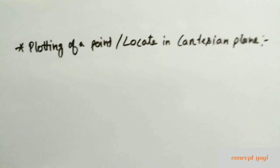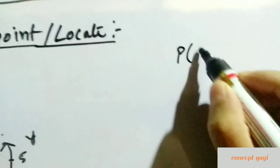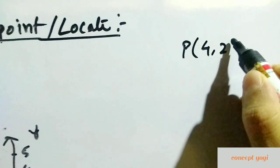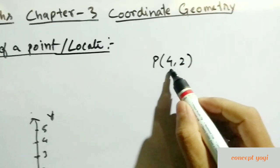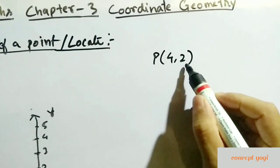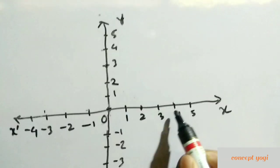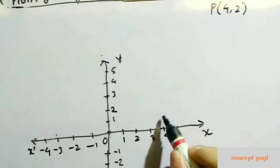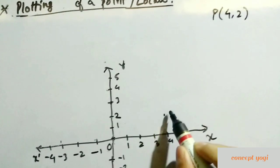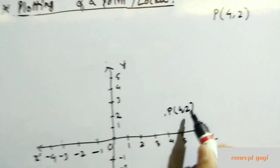Next is plotting of a point in the Cartesian plane. Suppose we are given coordinates P(4, 2) and asked to plot this point. The x-coordinate is 4, so we go to 4 on the x-axis. The y-coordinate is 2, so from there we go 2 units up. That gives us our point P(4, 2).